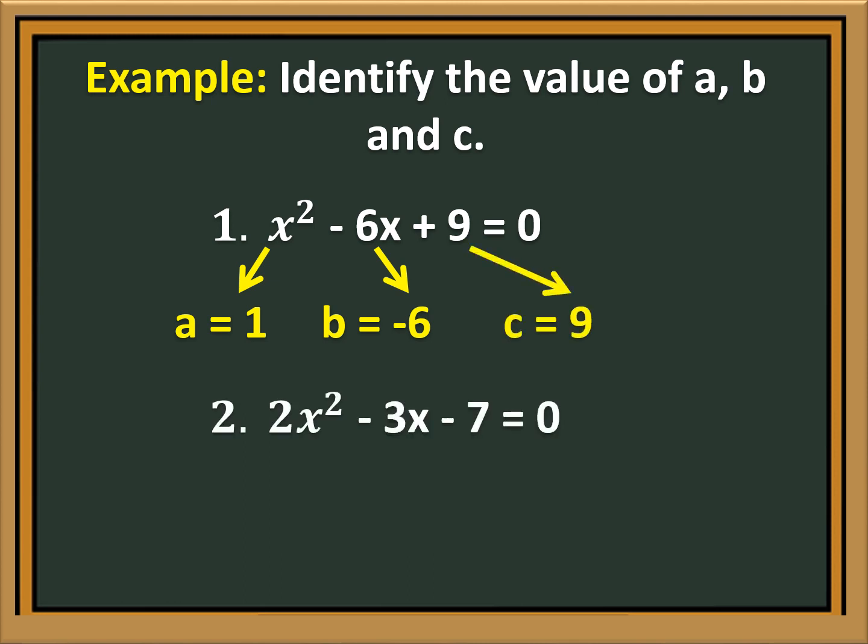Number 2: 2X squared minus 3X minus 7 is equal to 0. What is the value of A, B, and C? The value of A is 2, the value of B is negative 3, and the value of C is negative 7.